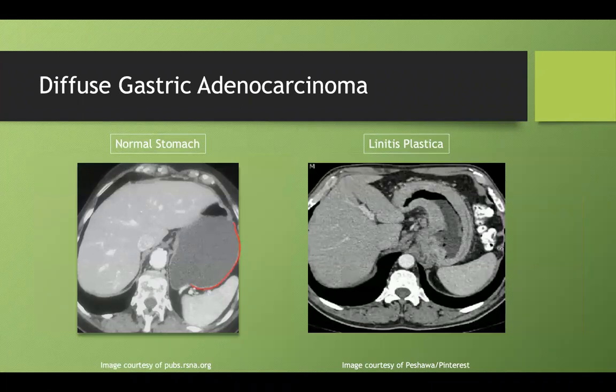On the other hand, linitis plastica refers to diffuse stomach wall thickening. On imaging, a normal stomach wall is very thin — pencil thin. But in linitis plastica, the stomach wall becomes markedly thickened. That's the hallmark appearance of diffuse gastric adenocarcinoma on imaging.